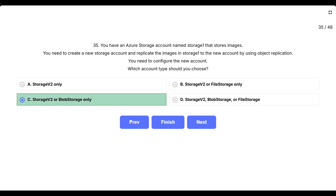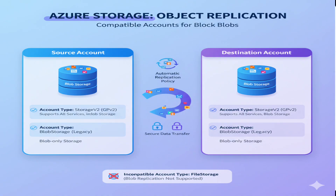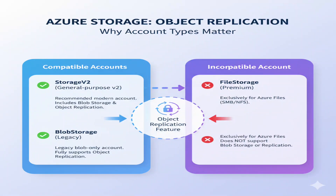The correct answer is C: Storage v2 or blob storage only. Object replication is an Azure feature that works specifically with blob storage to automatically copy block blobs between storage accounts. Storage v2 (General Purpose v2) accounts support all Azure storage services including blob storage, making them compatible with object replication. Blob storage accounts are legacy blob-only accounts specifically designed for storing unstructured data like images, and they fully support object replication features. However, file storage accounts are premium storage accounts designed exclusively for Azure Files — SMB and NFS file shares — not blob storage, so they cannot participate in object replication scenarios.